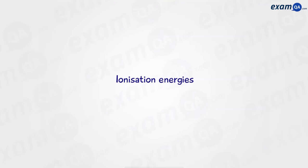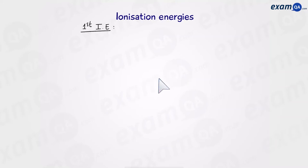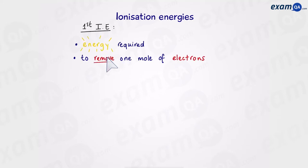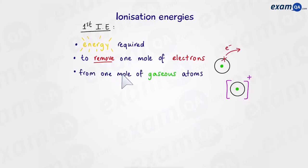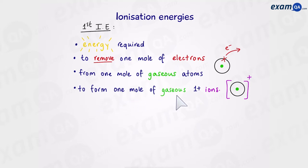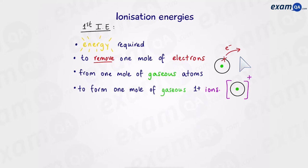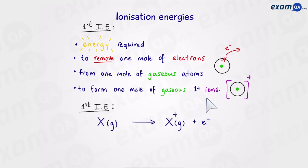Ionization energies. The first ionization energy can be defined as the energy required to remove one mole of electrons from one mole of gaseous atoms to form one mole of gaseous 1+ ions. In other words, ionization energy is measuring how much energy is required to remove electrons from atoms. The first ionization energy is removing that first electron from an atom and turning it into a +1 ion.